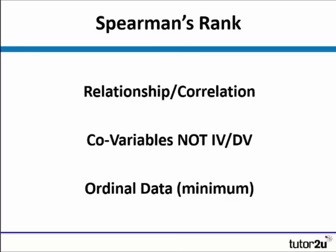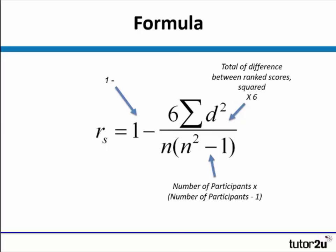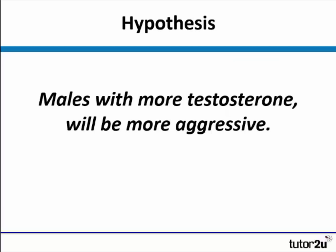This is the formula for Spearman's rank, and we're going to break this down step by step over the next few slides to discuss what each of these components means. The hypothesis we're going to test is: males with more testosterone will be more aggressive. So we're looking at the relationship between testosterone and aggression.